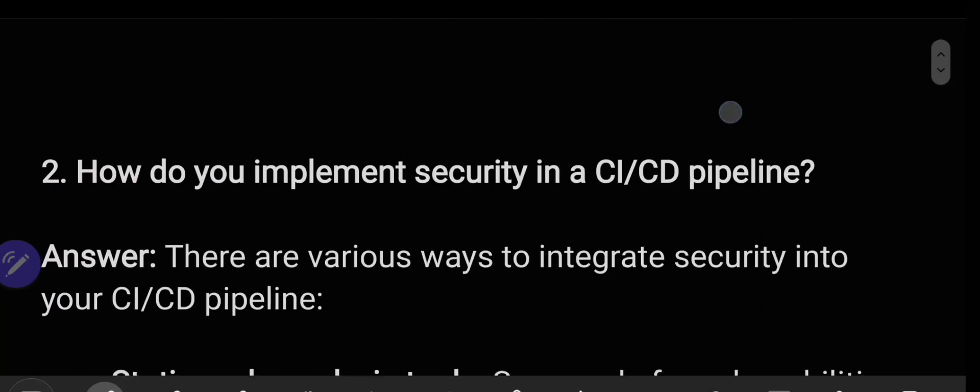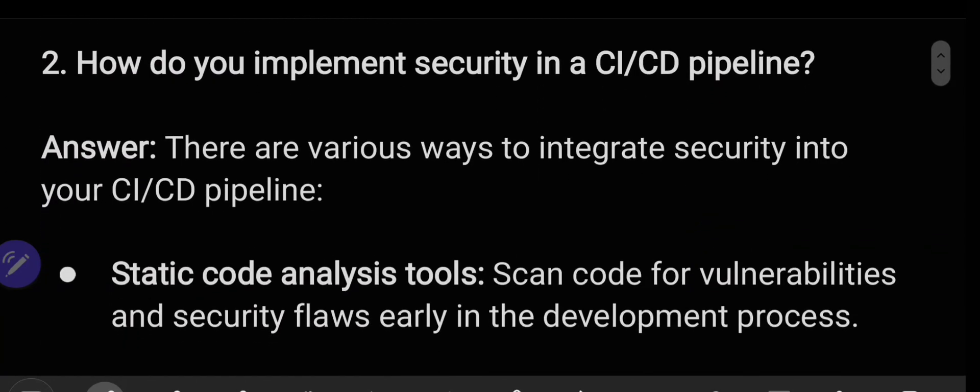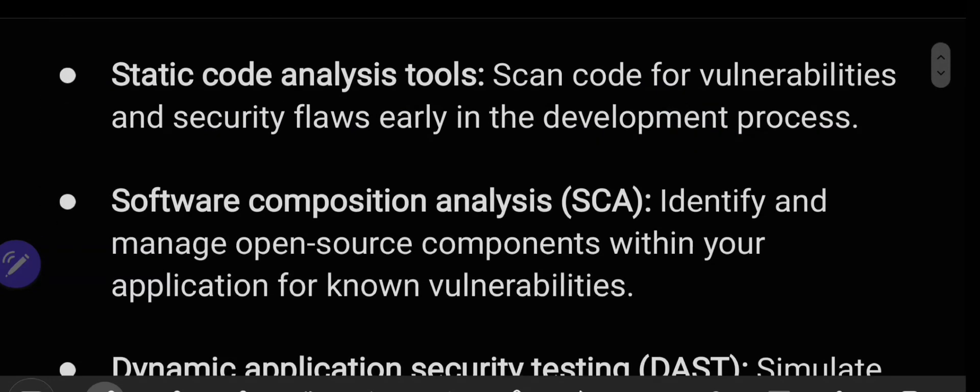The next question is: how do you implement security in a CI/CD pipeline? There are various ways to integrate security. Static code analysis tools scan code for vulnerabilities and security flaws early in the development process, so we can identify flaws and recover from them.